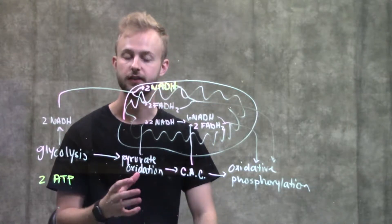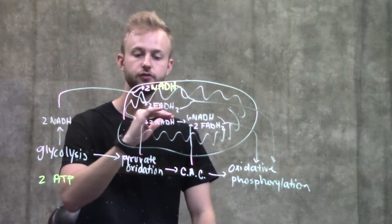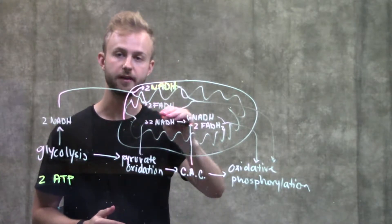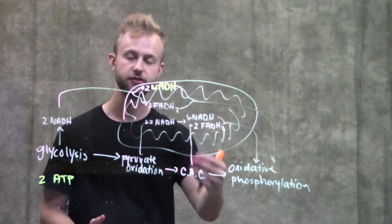In pyruvate oxidation, we don't produce any ATP, but we do produce two NADHs. From there we make acetyl CoA, and acetyl CoA goes to the citric acid cycle.